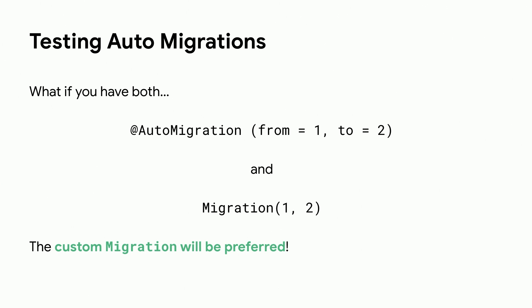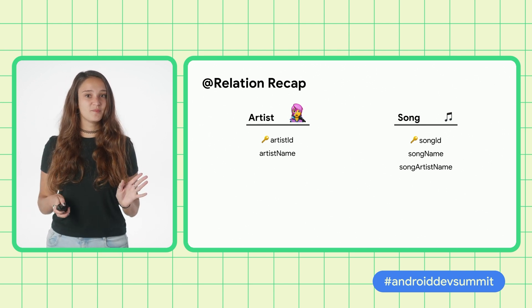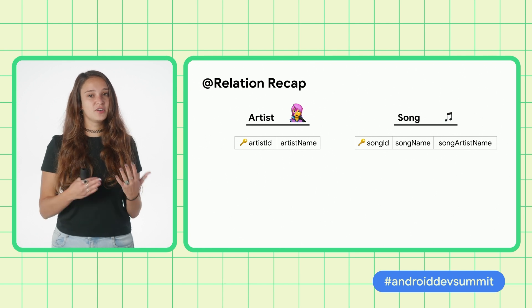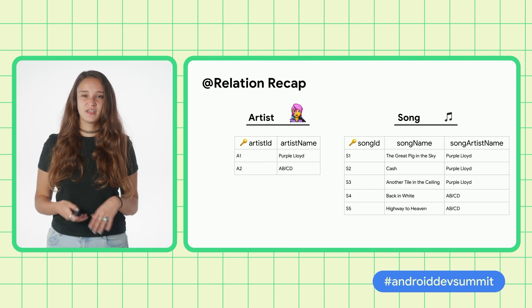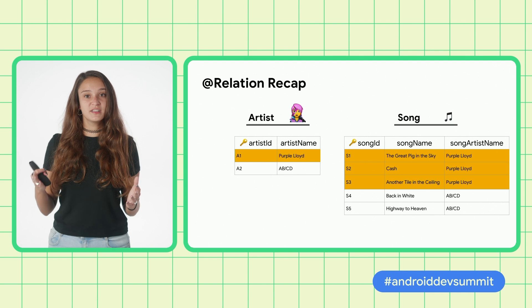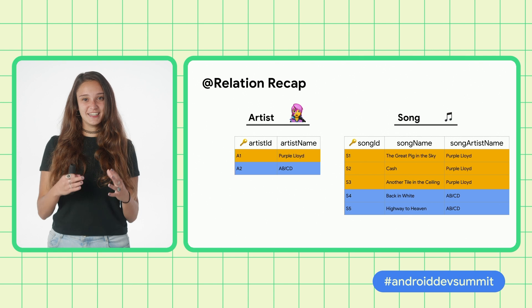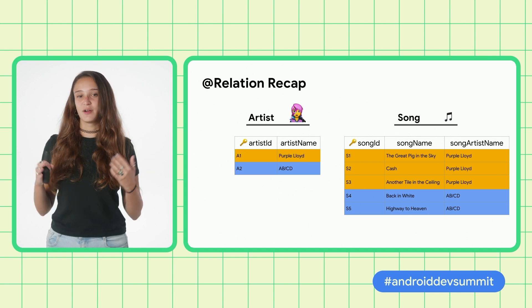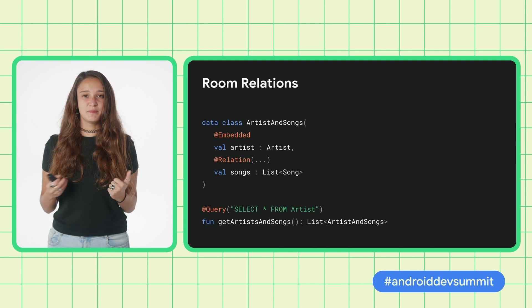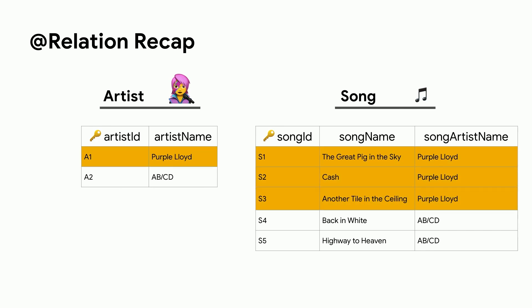Next up, we have another big feature we have made room for: relational query methods. Let's say we have the same database from before with the same tables, which are now artist and song, and we want to get a collection that is a mapping of artists to songs. Looking at this with some example data, Purple Lloyd would get matched with their hit songs such as Another Tile in the Ceiling or The Great Pig in the Sky, and ABCD would get matched with their songs Back in White and Highway to Heaven. If we're using Relation and Embedded, this is how the mapping would work — we create a brand new data class, ArtistsAndSongs, where an artist is related to a list of songs.